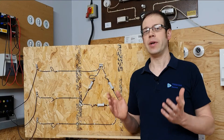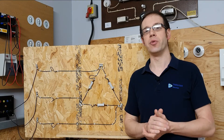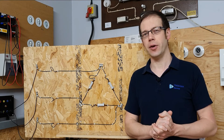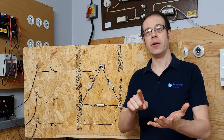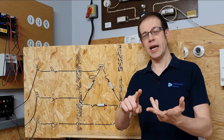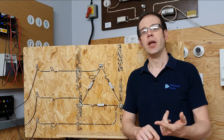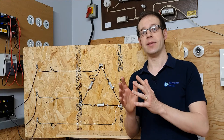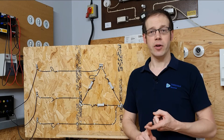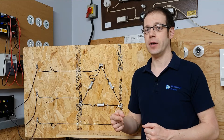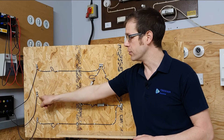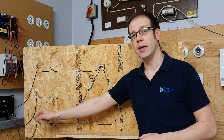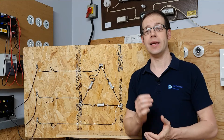In a previous video in this series on star connected loads we defined the different voltages and currents found inside a three phase connected load: phase voltage, line voltage, phase current, and line current. Let's remind ourselves of those definitions because we defined them in a way that works for both star and delta. The line voltage is the voltage between any two supply lines, so we could measure between L1 and L2, L1 and L3, or L2 and L3, and they will give us similar readings - we will get the line voltage.